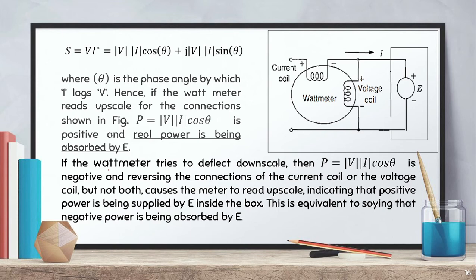The AC system within the box contains an ideal voltage source E with constant magnitude. An ideal voltage source has constant magnitude, constant frequency, and zero impedance. Polarity marks indicate the terminal positive during the positive half cycle, and the arrow indicates current flowing into the box during the positive half cycle. A wattmeter with a current coil and voltage coil is correctly connected to obtain an upscale reading.